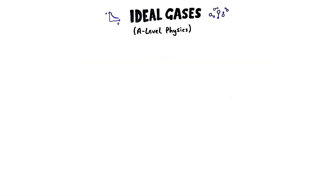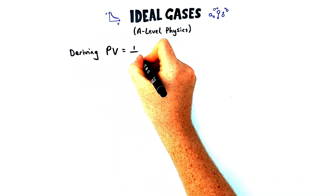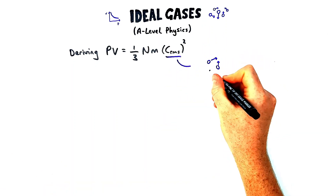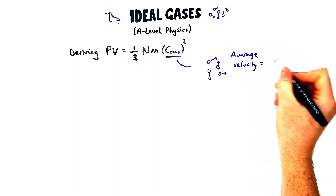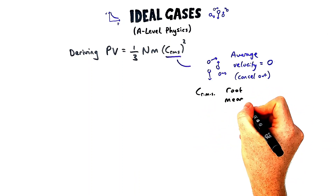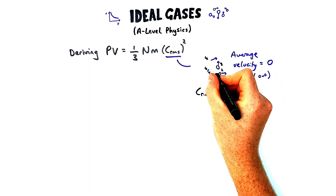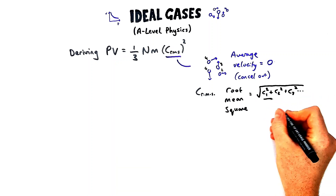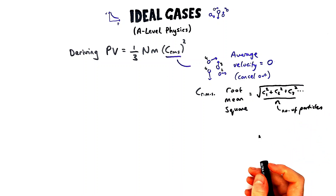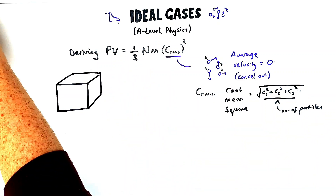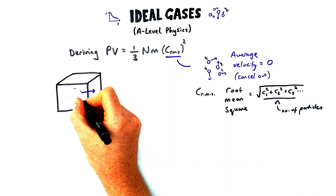Next we'll look at one of the hardest derivations in Year 13 physics, but it's good use of applying different parts of physics to ideal gases. We're deriving the expression PV = ⅓Nmc²_rms. The last term is the root mean square speed. If you find the average velocity of a bunch of particles, no matter what speed they're going, the average will equal zero because they travel in different directions and cancel out. So we use root mean square speed: you square the values, add them, find the mean, then square root.